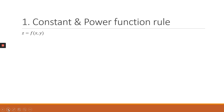Assuming we have a z function explained by two independent variables x and y, when we calculate the partial derivative, let's take note of the different notations we can use. The partial derivative of z with respect to x can be written using the rounded d, or as a fraction with the rounded d, or as f with a subscript x. All three notations say the same thing — you are finding the partial derivative of z with respect to x.